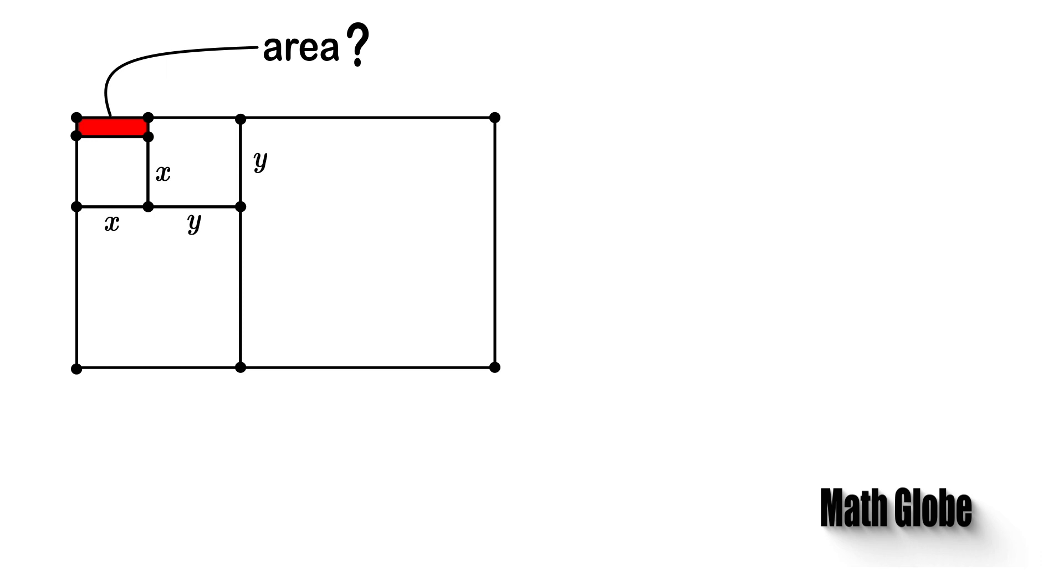Okay, let's start by giving names x and y to the two smallest squares' sides. All right, next let's go ahead and name all the sides accordingly using these names.